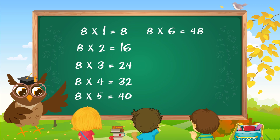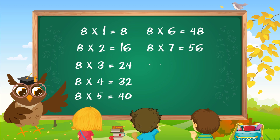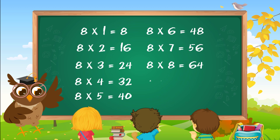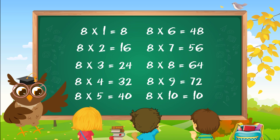Eight sixes are forty-eight. Eight sevens are fifty-six. Eight eights are sixty-four. Eight nines are seventy-two. Eight tens are eighty.